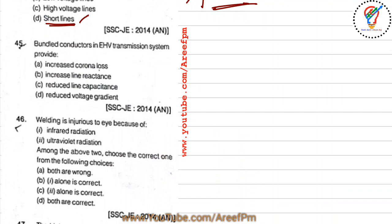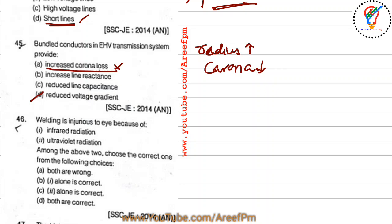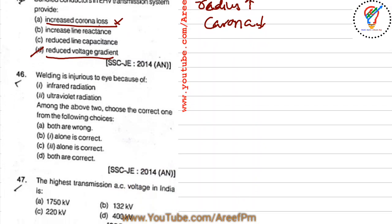Question 45: bundle conductors in EHV transmission systems — the main effect is an increase in the effective radius of the phase conductors. This increased radius decreases the surface voltage gradient, thereby reducing corona. So 'reduced voltage gradient' is the right option, not 'increase in corona loss.'